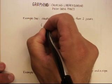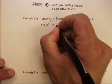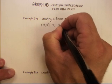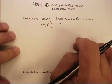Let's just pick one. Let's say we have 2, 5, and 3, negative 4. So, how do you create the equation of the line that goes through those two points?